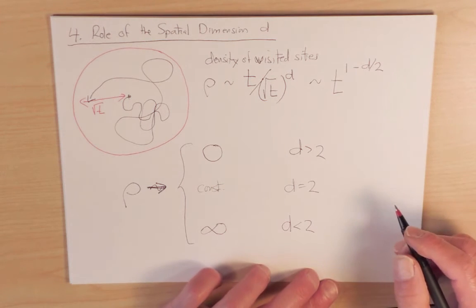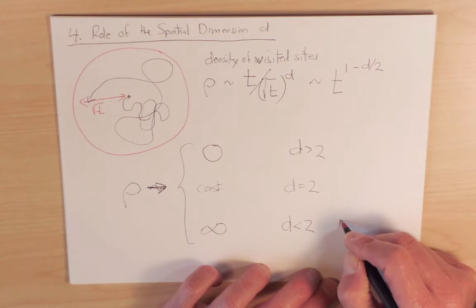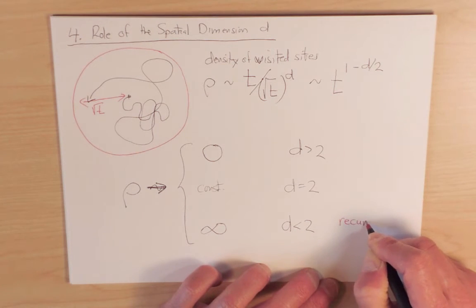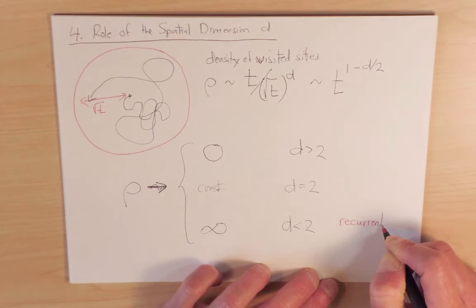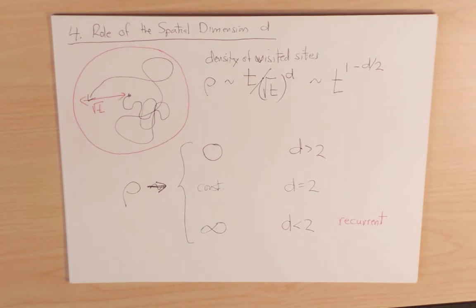So for d less than 2, this regime is what's called recurrent behavior. And what is meant by recurrent behavior is that because the density of points is infinite, it means that a random walker as it's moving about will visit every single site.